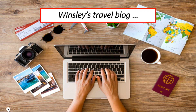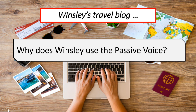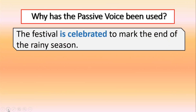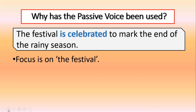Now, why do you think Winsley uses the passive voice? Let's study this example: The festival is celebrated to mark the end of the rainy season. What could be the reasons why Winsley uses the passive voice here? Well, Winsley wants to focus on the festival. That's why he writes the festival at the very start of the sentence. Hence, the writer chooses to use the passive voice as it helps him to emphasize the festival.